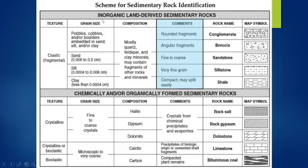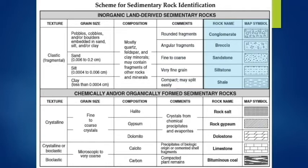There are also some comments that talk about each of the rocks: conglomerates tend to be rounded, fragments in breccia are angular, shale tends to split easily. And the last thing is the map symbols — when we look at geologic history those will become way more important; right now you can just know that they're there.